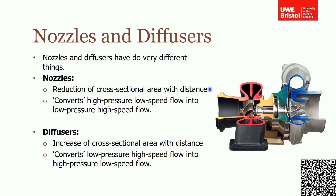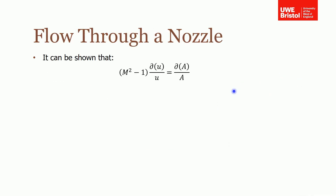So you can see the difference between nozzle and diffuser and how they're both used in this one turbocharger device — a nozzle on the turbine side creating high-speed flow, and a diffuser on the compressor side generating high-pressure air going into the engine. Now, looking at the flow through a nozzle mathematically, it can be shown that the change in velocity and the change in cross-sectional area are related to the Mach number of the fluid.